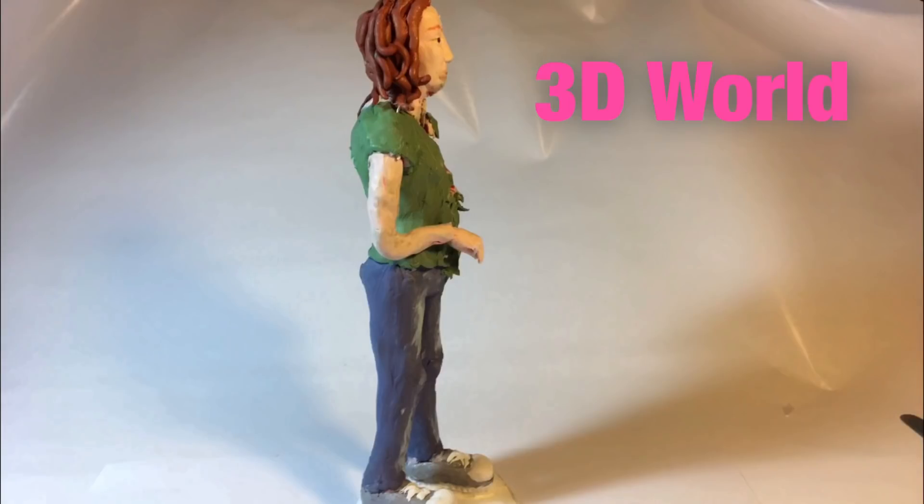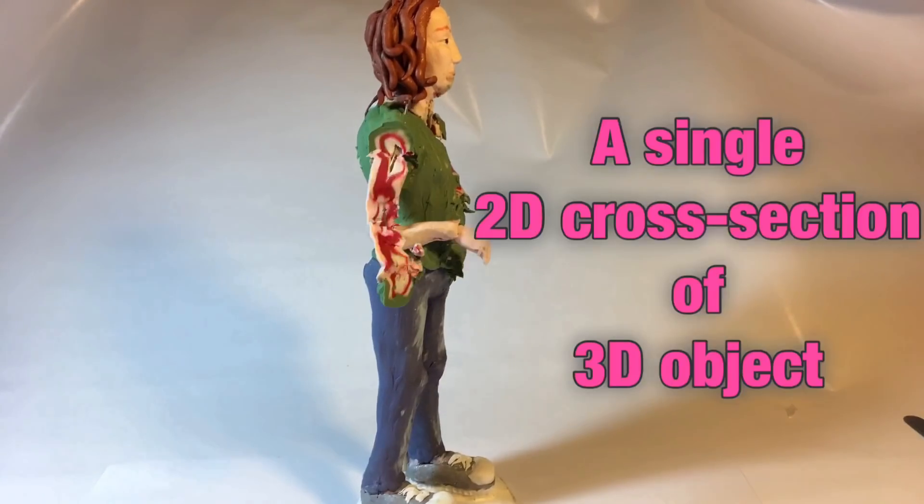Similarly, in three dimensions, we can only see one two-dimensional cross-section of a given object at a time. Just like the situation we saw in the 2D world, if we were to move from 3D to 4D, we would suddenly be able to see every cross-section of a three-dimensional object at once.